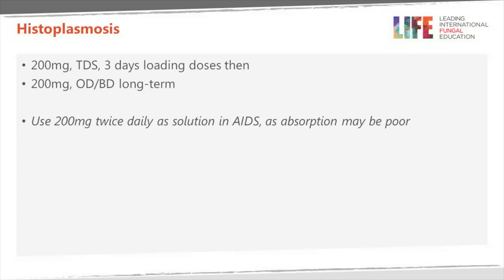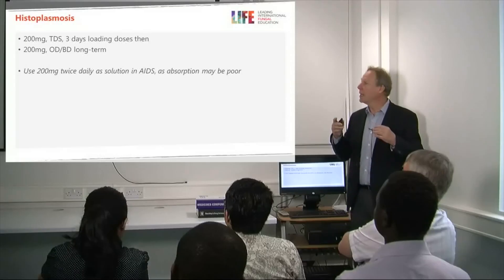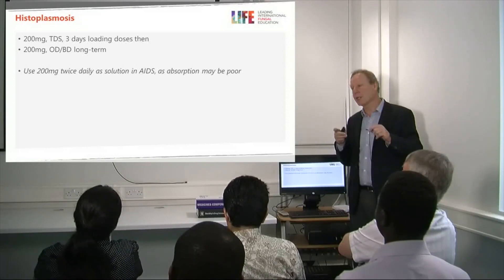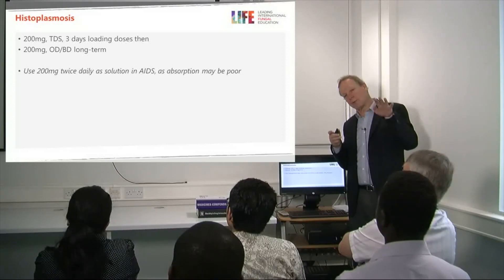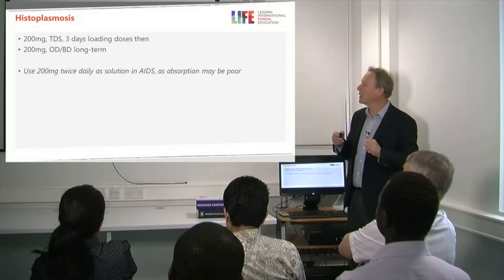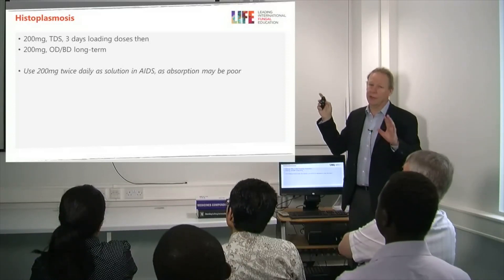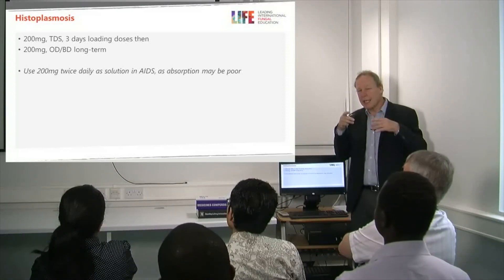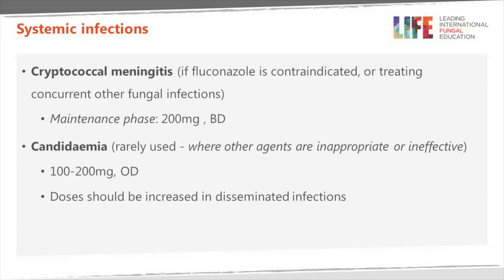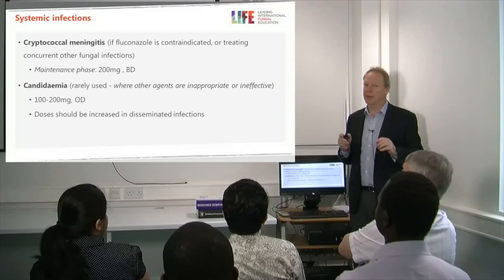For histoplasmosis, particularly acute disease, we load the patient. Because of the long half-life, a loading dose can boost levels early — three days of 200 mg three times a day is useful. Patients then go on 200 mg once daily if they don't have AIDS; if they do have AIDS, we use double the dose due to absorption issues. The solution is preferred in AIDS patients as late-stage patients may not absorb well and may not be eating adequately. For cryptococcal meningitis where fluconazole is contraindicated, the typical dose is 200 mg twice a day. Itraconazole is rarely used for candidaemia these days.